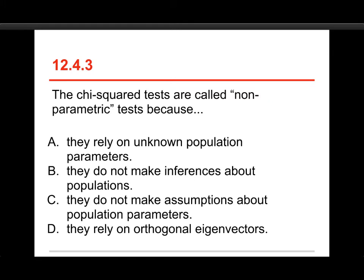Okay, the chi-squared tests are called non-parametric tests because A, they rely on unknown population parameters, B, they do not make inferences about populations, C, they do not make assumptions about population parameters, or D, they rely on orthogonal eigenvectors.